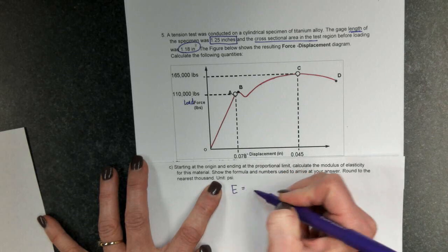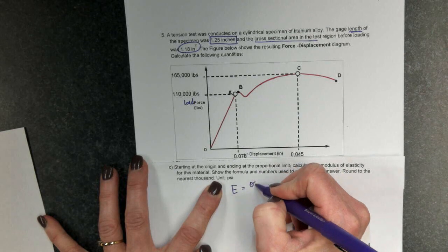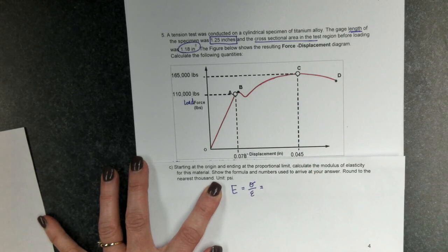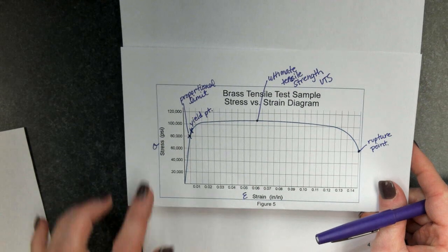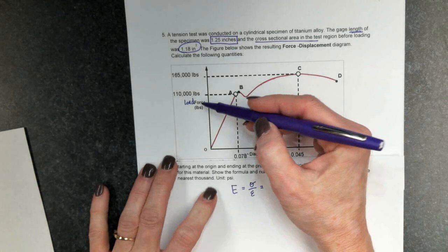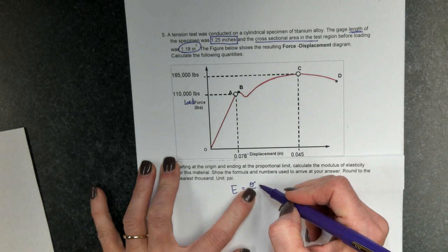So, modulus of elasticity, capital E, is the stress divided by the strain. Well, if I had a stress-strain graph, as in my other example, I can just do this number divided by this number. But that's not what I have here. I have a force displacement curve.